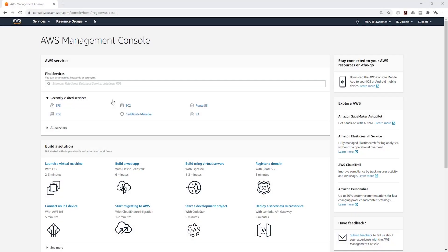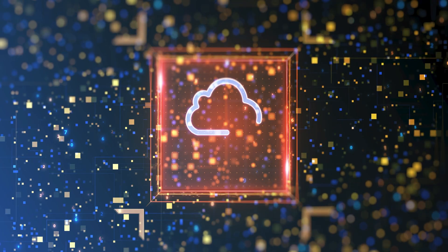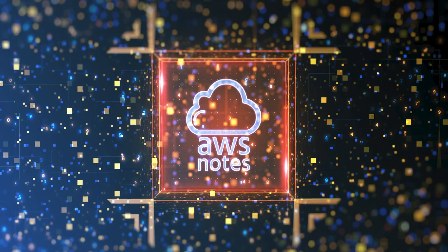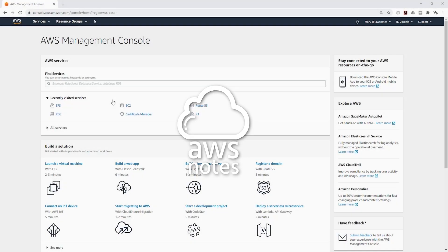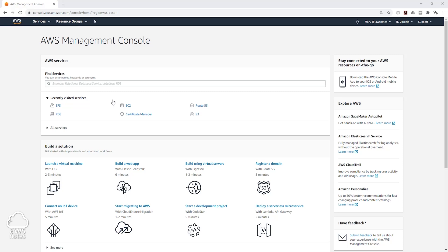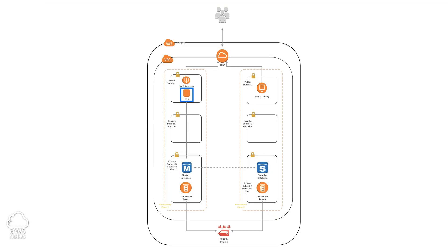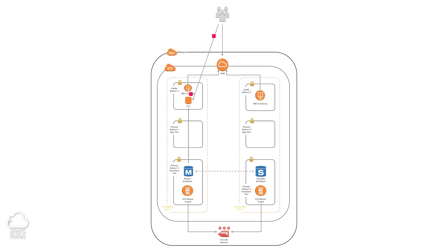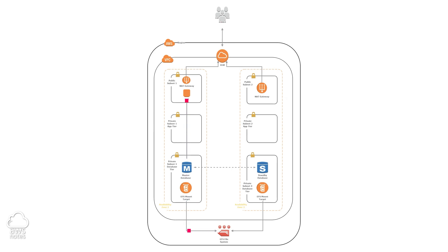In this lecture we are going to install our WordPress application. To do that, we are going to launch an EC2 instance in the public subnet, then SSH into that instance and manually install WordPress. Once we are done with that, we are going to transfer our WordPress application code to our file system. Let's see how we can do that in the management console.